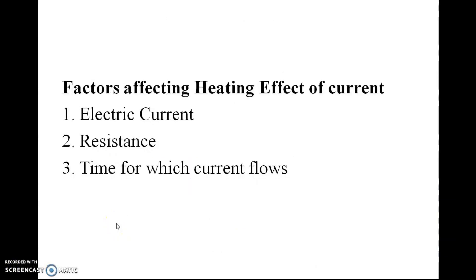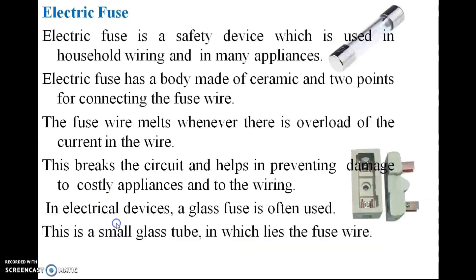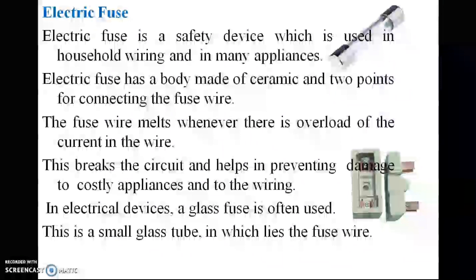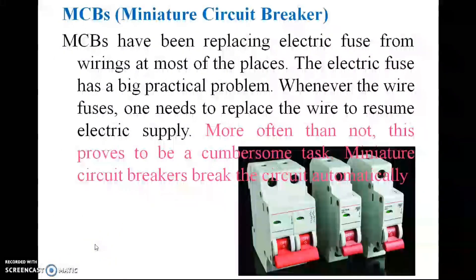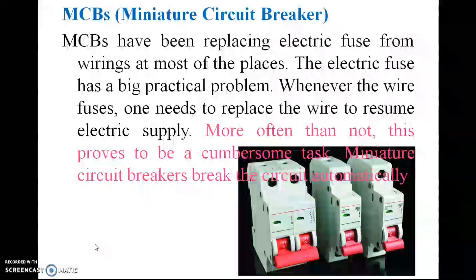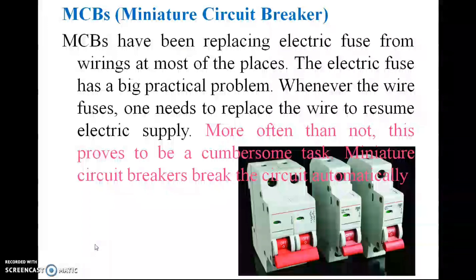Factors affecting the heating effect of current include electric current, resistance, and the time for which current flows. An electric fuse is a safety device used in household wiring and appliances. It has a ceramic body with two connection points. The fuse wire melts whenever there is an overload of current, breaking the circuit and preventing damage to costly appliances. Miniature circuit breakers (MCBs) have replaced electric fuses in most places, as they break the circuit automatically without needing wire replacement.